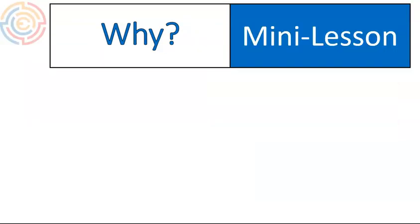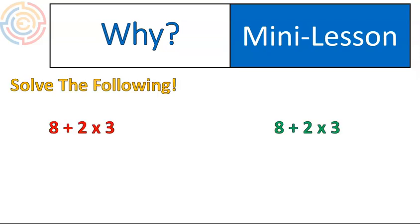First off, the why behind it. I'm going to show you the same question twice here and pretend that we were going to solve it in two different ways. In my first example, I'm just going to do everything starting at the left, moving to the right. 8 plus 2 is 10, and then I'm going to multiply 10 times 3, which gives me 30. On the example over there on the right, I'm going to multiply first. 2 times 3 gives me 6, and now I'm going to add 8 plus 6, which gives me 14.